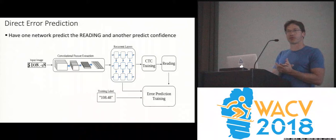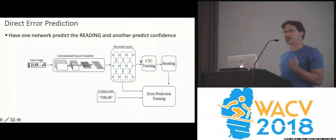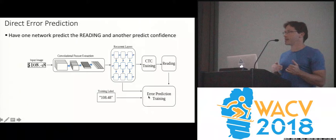So what we did was train a deep neural network. The first network is an RNN trained with CTC loss to produce the reading. We then add a second neural network that gives the confidence — it looks at what was read and predicts whether the reading is correct or not.